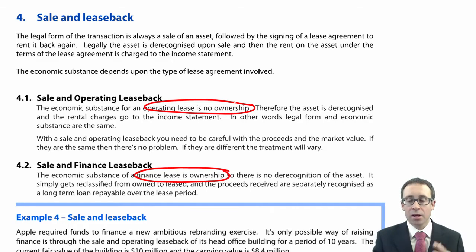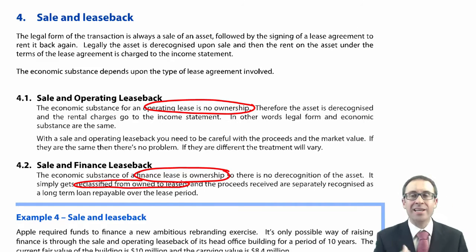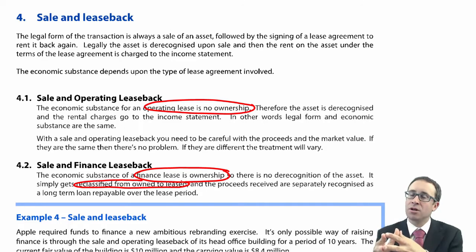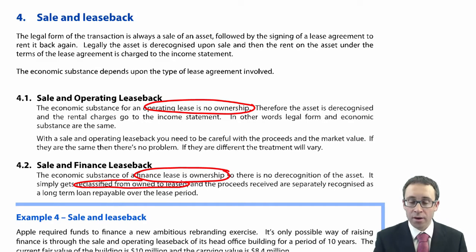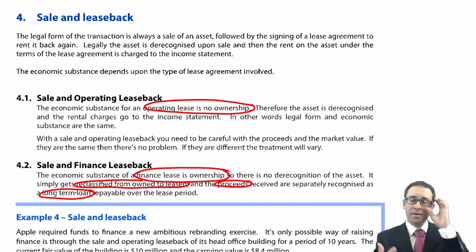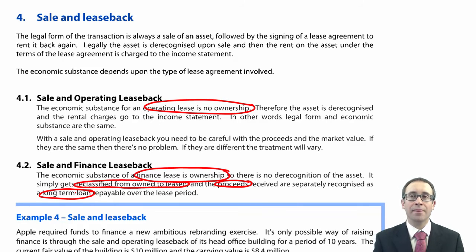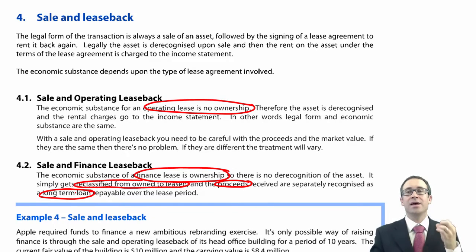Since the asset doesn't in substance leave your hands, we treat it as if it never left. All we do is reclassify it from 'owned' to 'leased' - it's still there as PPE and we still depreciate it, but you need to make a separate disclosure in the notes to the accounts. The proceeds received are debited to bank and recognized as a long-term loan. As you make lease payments, you credit the bank, debit the loan, and charge interest on the outstanding balances.